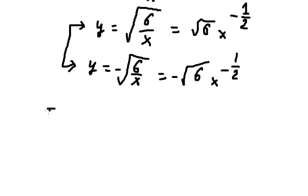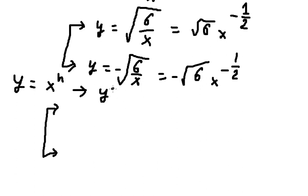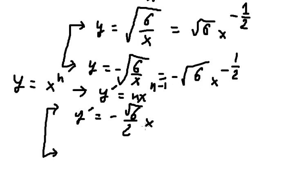Now if we take the first derivative, we have the formula here. So we get negative of the square root of 6 over 2, times X to the power of negative 1 over 2 minus 1, which is negative 3 over 2. And the second one follows similarly.